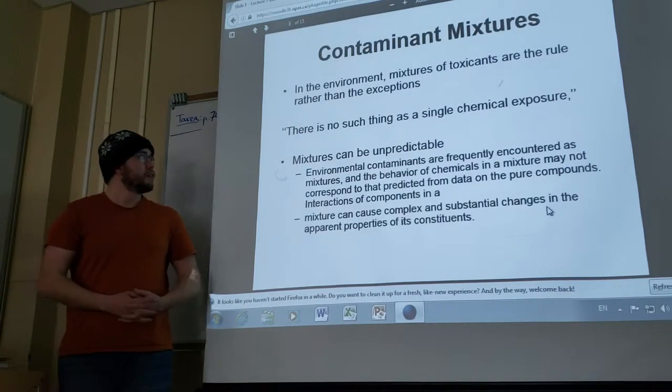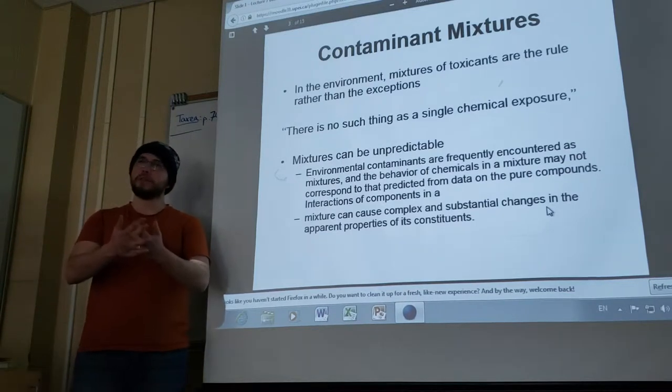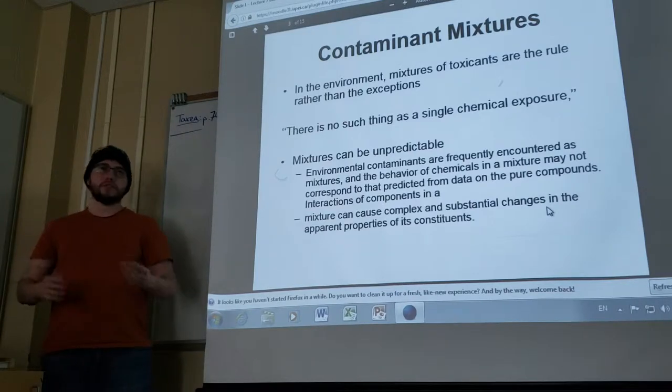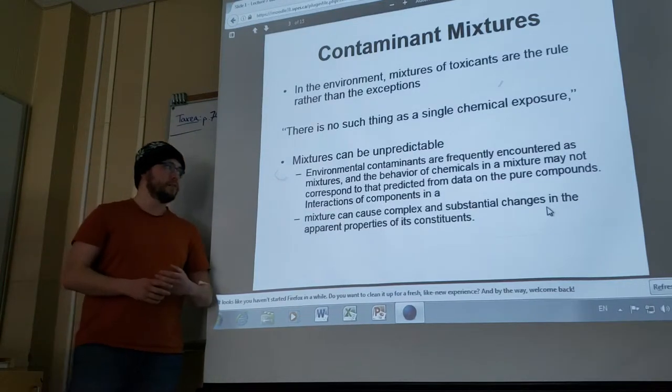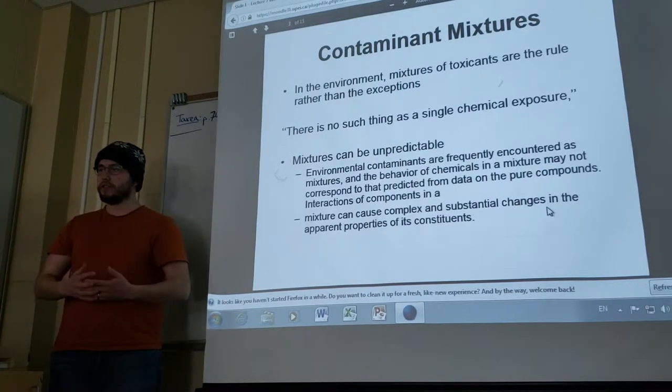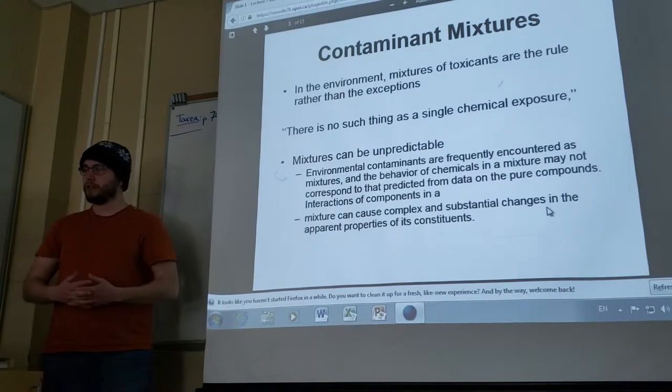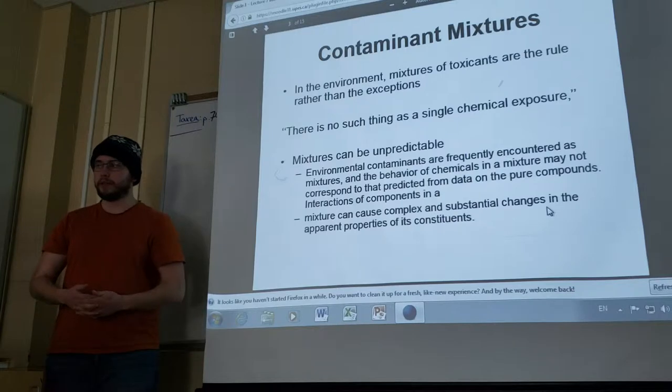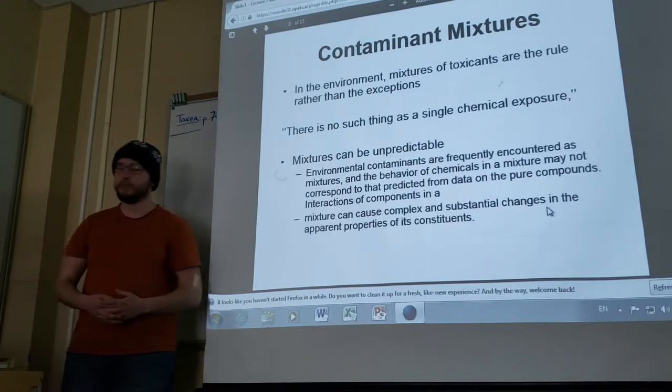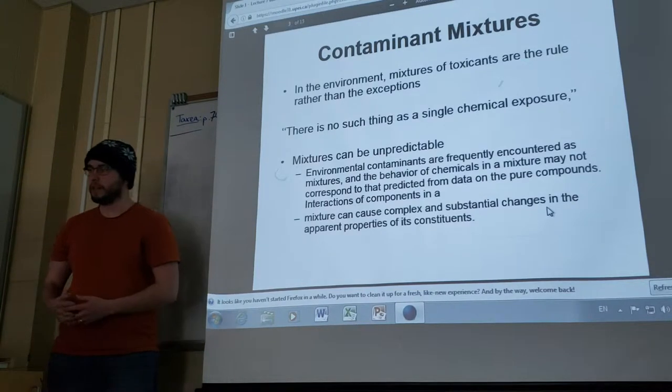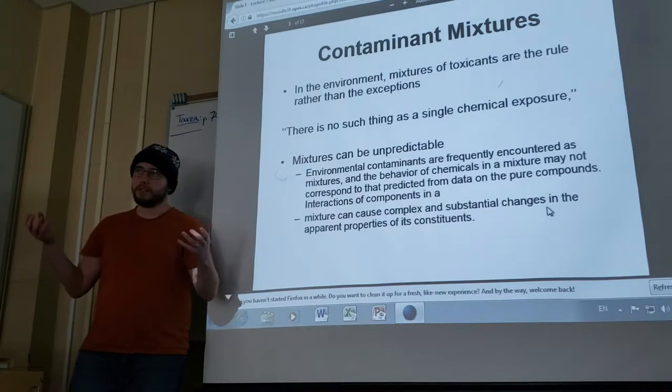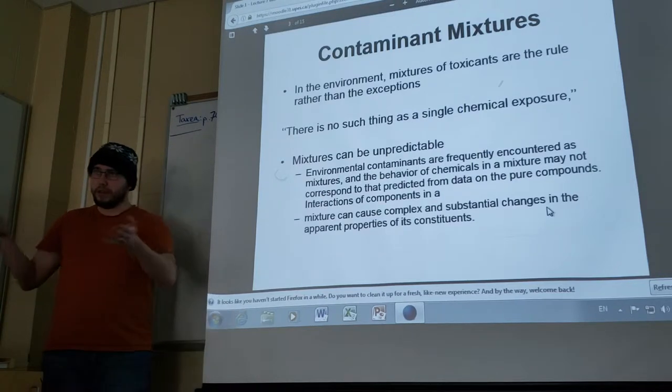First, contaminant mixtures. In the environment, mixtures of toxicants are the rule rather than the exception. There is no such thing as a single chemical exposure. Mixtures can be unpredictable. However, environmental contaminants are frequently encountered as mixtures, and the behavior of chemicals in a mixture may not correspond to that predicted from data on pure compounds. Interactions of components in a mixture can cause complex and substantial changes in the apparent properties of its constituents. Essentially, when you mix two things, it's not necessarily going to be A plus B equals C. It could be more than that or less than that.